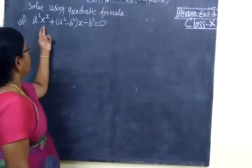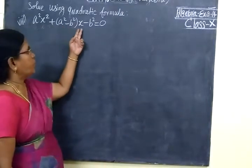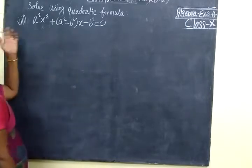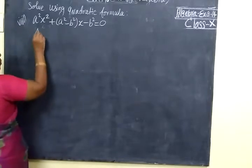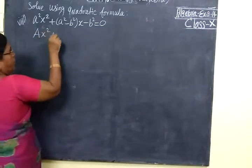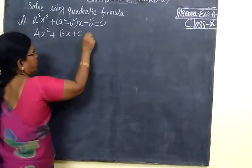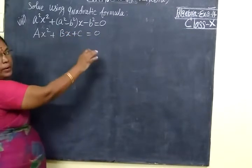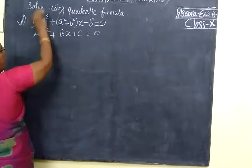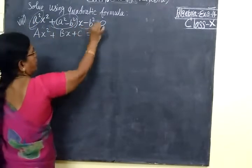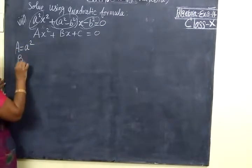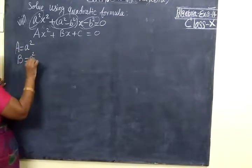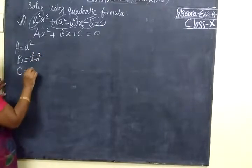Good evening students. Here A²x² + (A² - B²)x - B² = 0. We already have some 7 sums done, now we are going to do sum 8. We will compare this with the standard quadratic equation A²x + Bx + C = 0. So A = A², B = A² - B², and C = -B².